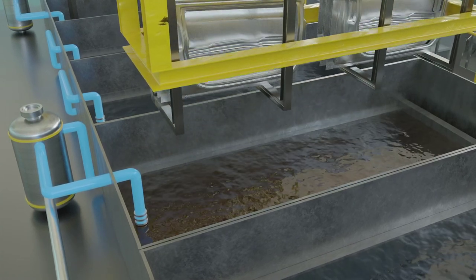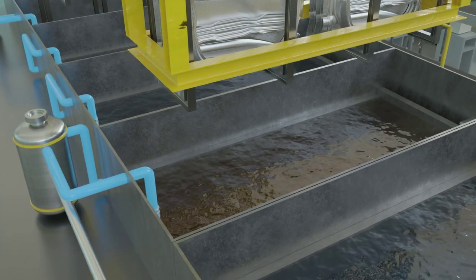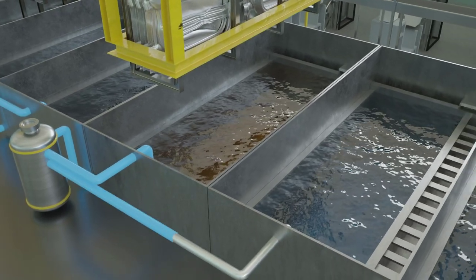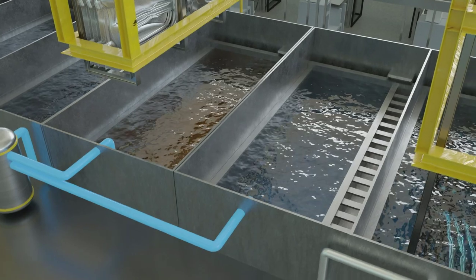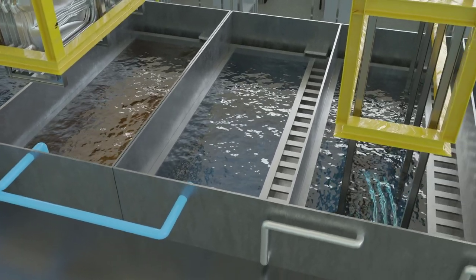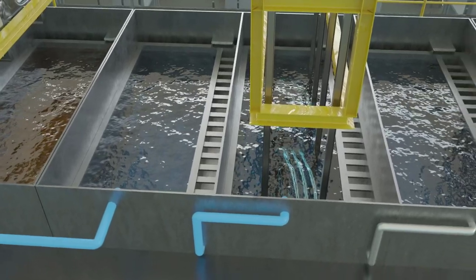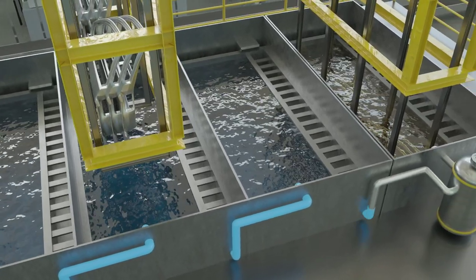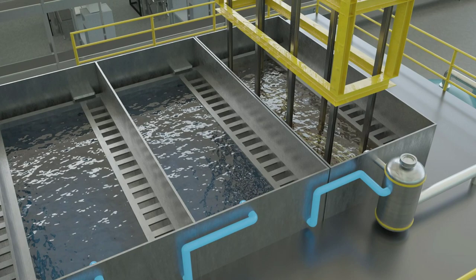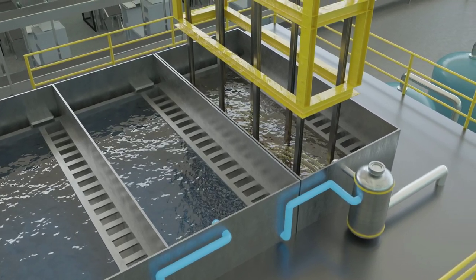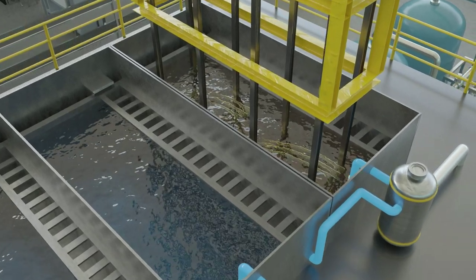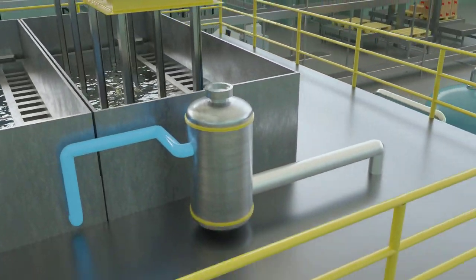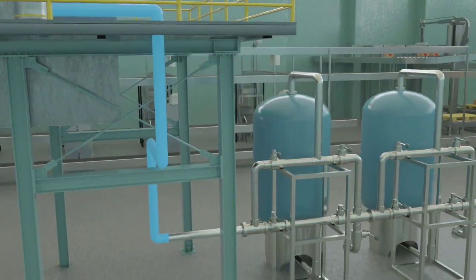However, the water from the buffer storage not only compensates for the losses in the degreasing bath, it also flows to the flushing cascade in front of it. The water flows through this cascade according to the same principle. And here, too, the water from the last cascade ends up in a buffer storage tank, and part of this flows back into the degreasing in front of it. Here, too, some of the chemicals are recycled. Only a remainder of the water is discarded and is treated in a separate wastewater plant before it is discharged into the sewer system.